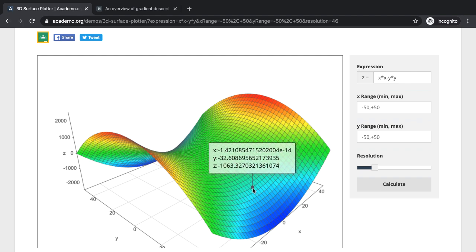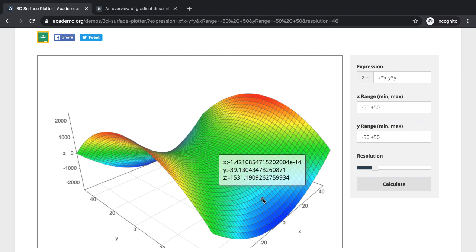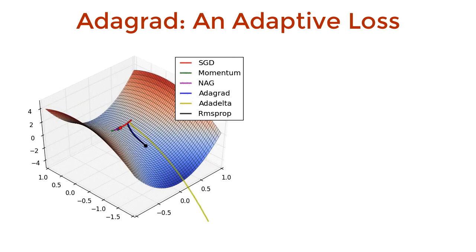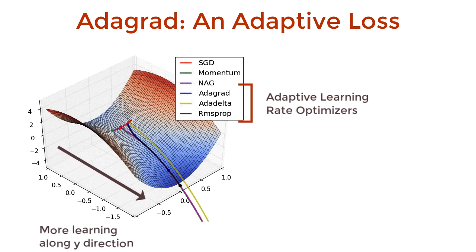With an adaptive loss, I have more degrees of freedom to increase my learning rate in the y-direction and decrease it along the x-direction. In fact, this is what we see here. Adaptive learning rate optimizers are able to learn more along one direction than another, hence they can traverse this kind of terrain.